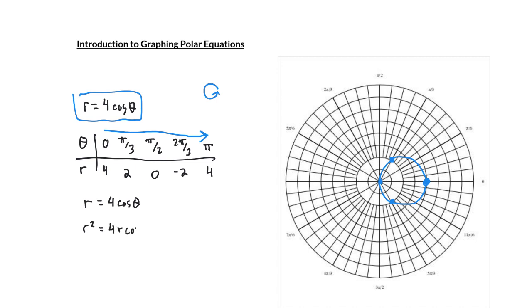The algebra that I can do is multiplying both sides of the equation by r so that I get r squared equals 4 r cosine theta. I know that r squared is x squared plus y squared, and I know that r cosine theta is x. So I get this equation x squared plus y squared equals 4 x.